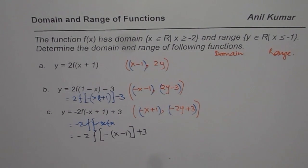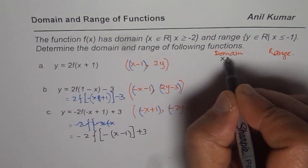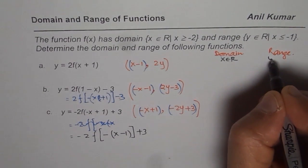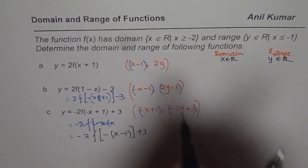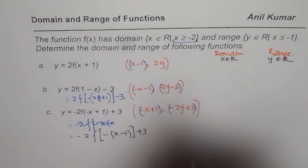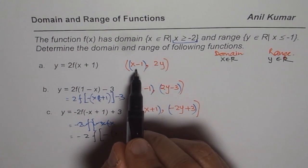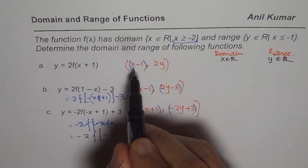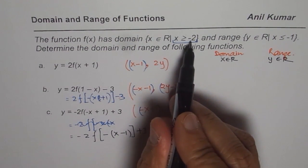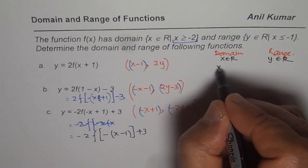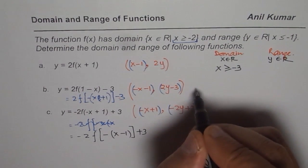For the first one, domain is x belongs to real numbers. I will only write the restriction. The x values are greater than or equal to minus 2, and here we have to take away 1. So if I take away 1, it will be x is greater than or equal to minus 3.